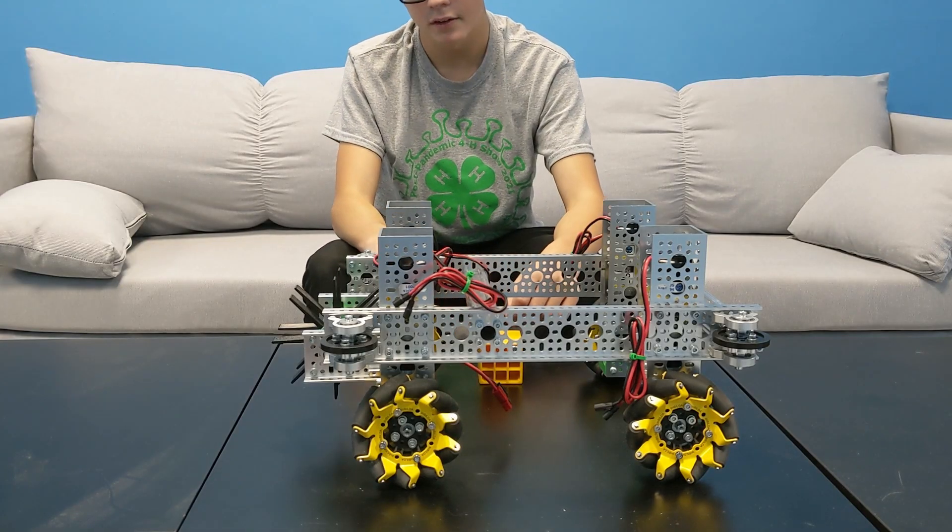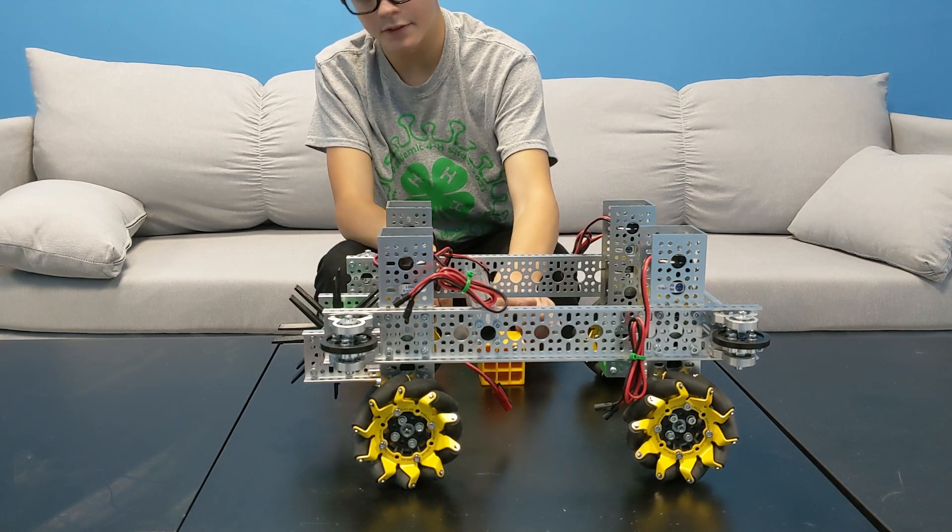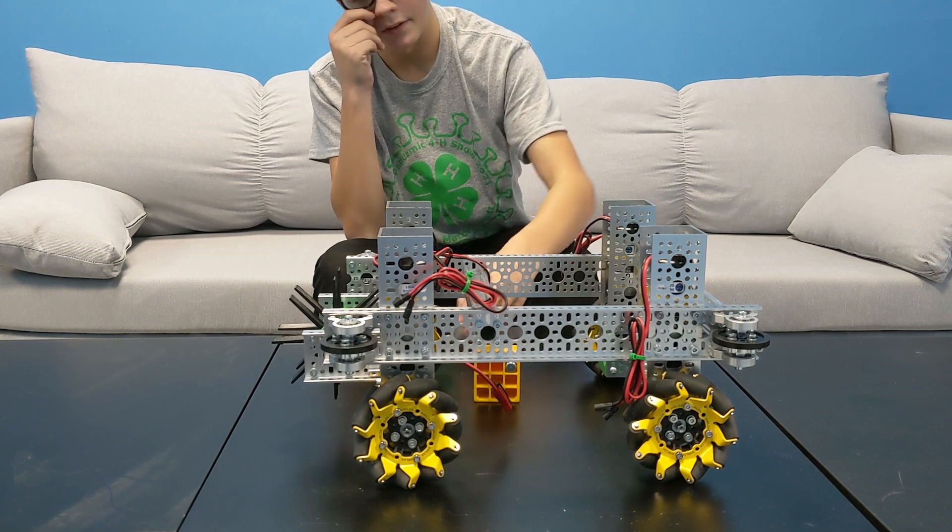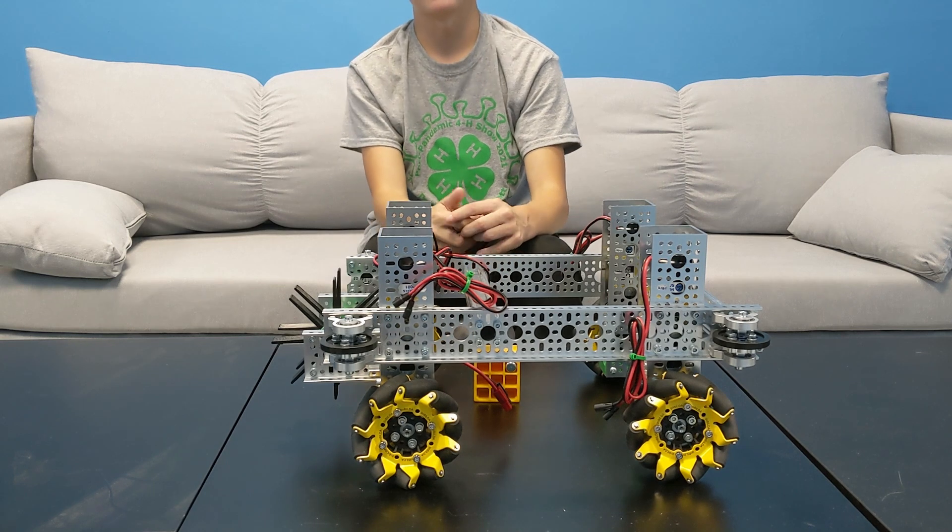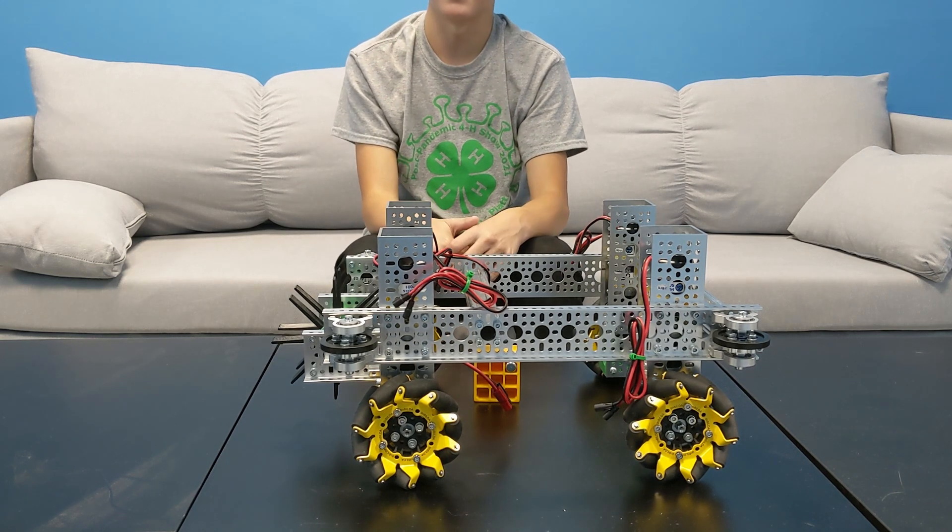An improvement for our robot is that it is higher off the ground so it can go over the shipping elements. This allows us to strafe off the shipping elements, which stops us from taking too many shipping elements at a time.